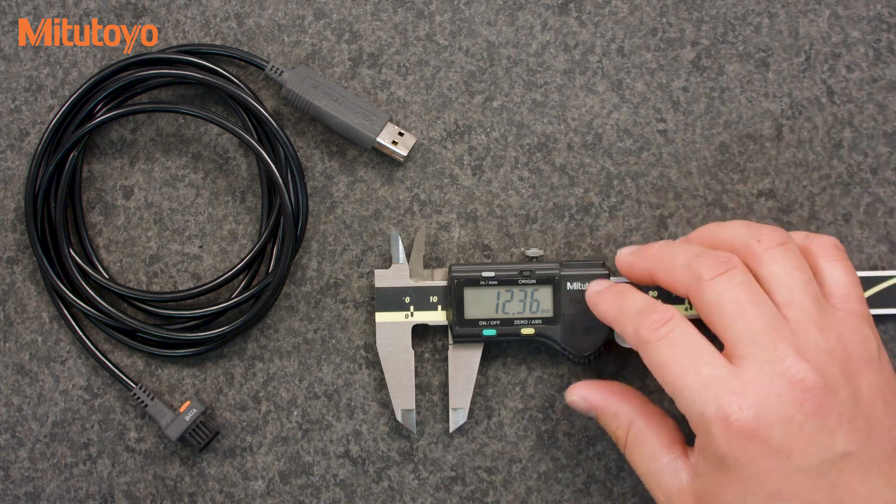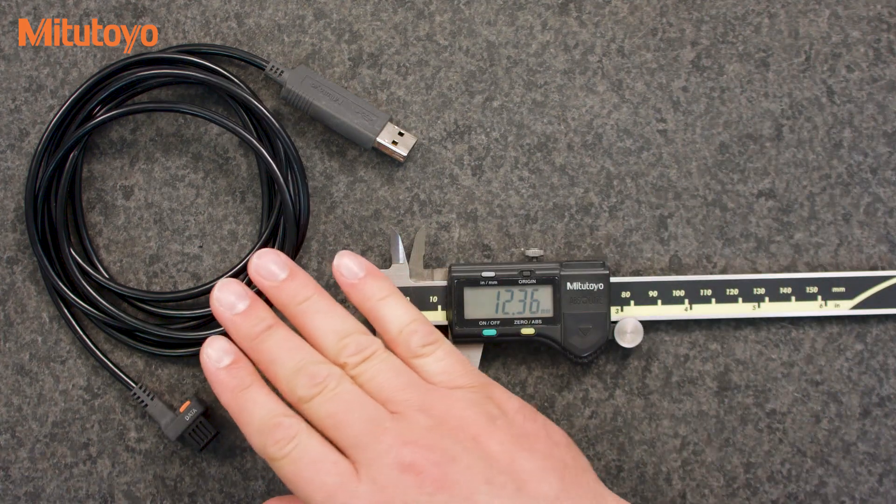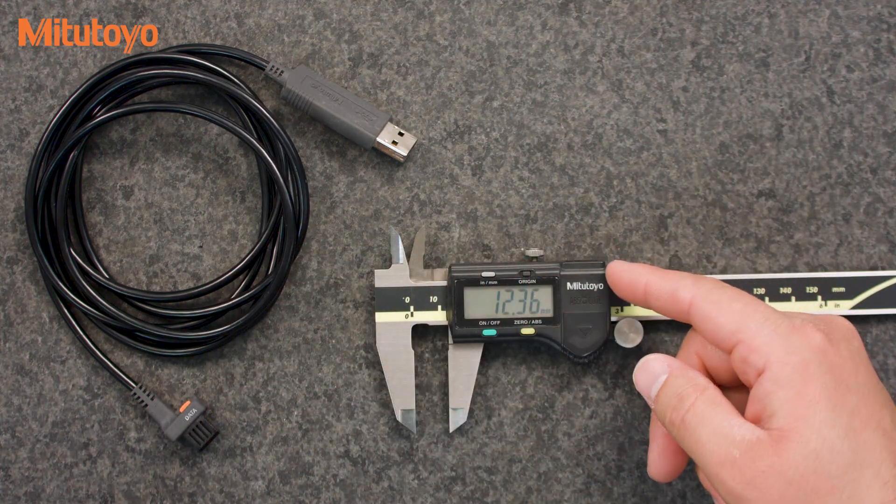The input tool is an easy way to get data from a gauge into a computer. Seven different cables are available, one for each type of Digimatic connection.